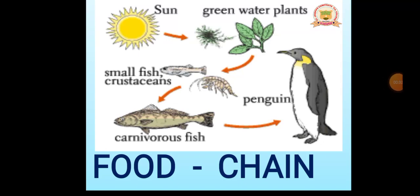Hi students, in this session we will understand about food chain. You might have heard about this important term in biology — one of the important concepts related to the survival of most species. When only one element — whether green plants, small fishes, or carnivorous fishes — is removed from the food chain, it can result in the extinction of a species in some cases. We will understand food chain and its importance in this session.